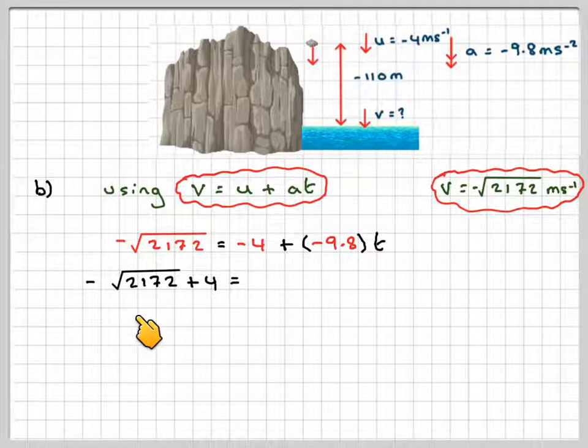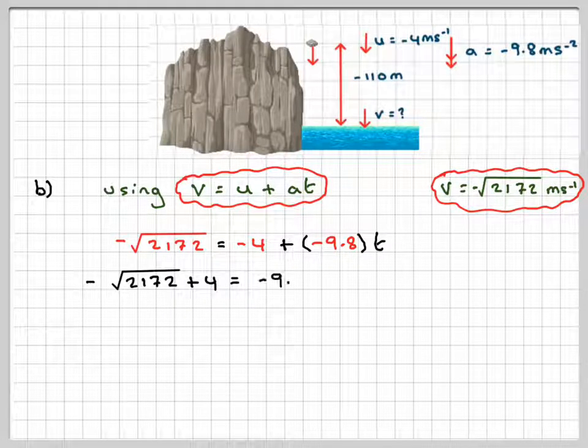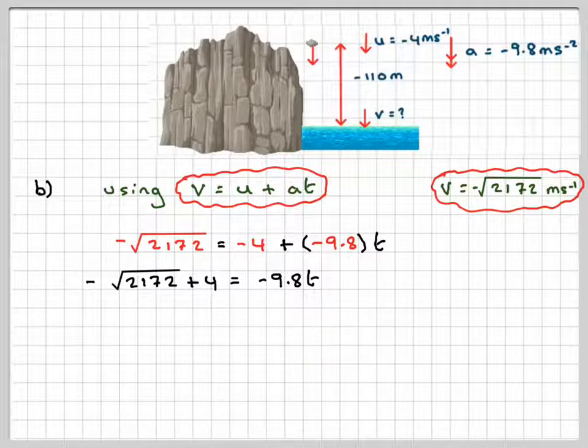So we're going to get -√2172 + 4, taking that over there, is equal to -9.8t.